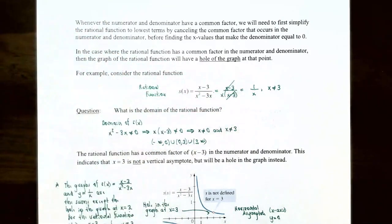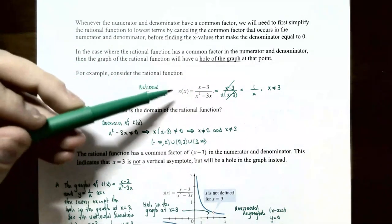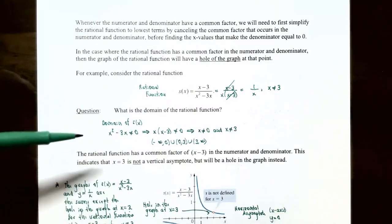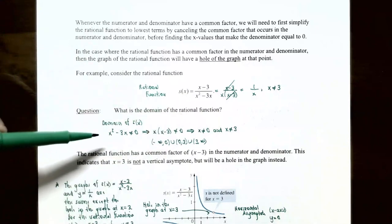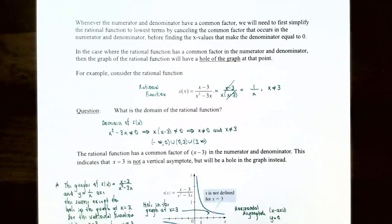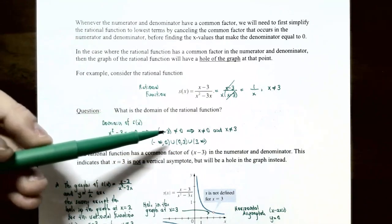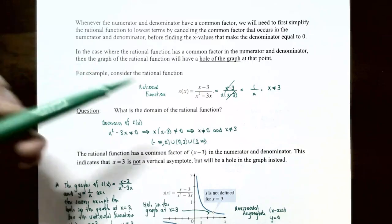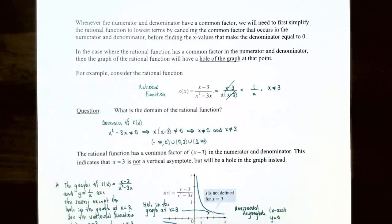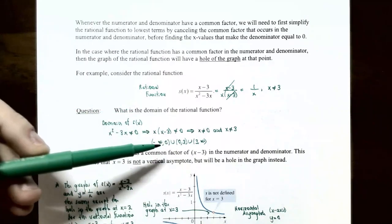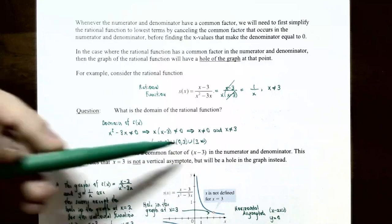Notice that the domain of s(x) still applies. The denominator x squared minus 3x cannot be zero; factoring gives x times (x minus 3), so x cannot be 0 and x cannot be 3. The domain of this rational function is the set of all real numbers except x equals 0 and x equals 3, or in interval notation: negative infinity to 0, union 0 to 3, union 3 to infinity, each with parentheses.